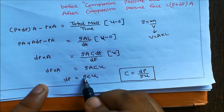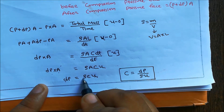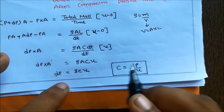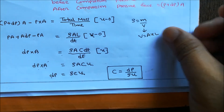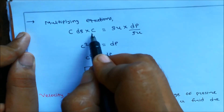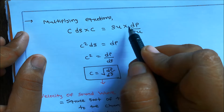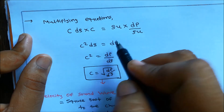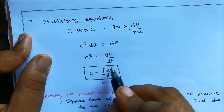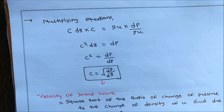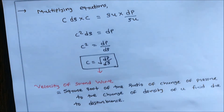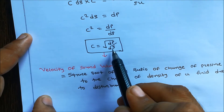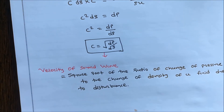From the continuity equation we have C·d-rho equals rho·U, and from the momentum equation C equals dP divided by (rho·U). Multiplying these two equations: C·d-rho times C equals rho·U times dP divided by (rho·U). The rho·U terms cancel, giving C² times d-rho equals dP. Therefore C² equals dP divided by d-rho, and C equals the square root of dP divided by d-rho. This is the equation for the velocity of a sound wave — the velocity of sound equals the square root of the ratio of change of pressure to the change of density of the fluid due to the disturbance.